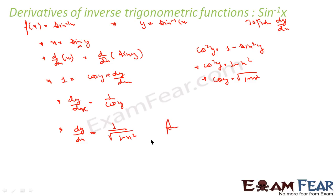So what I have done: I got y = sin⁻¹x, then wrote x = sin y, differentiated everything with respect to x, got dy/dx = 1/cos y, then wrote cos y in terms of x using sin y = x, and got the answer: dy/dx = 1/√(1 − x²).